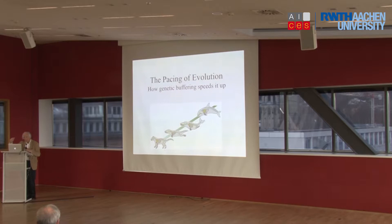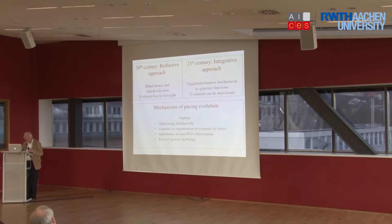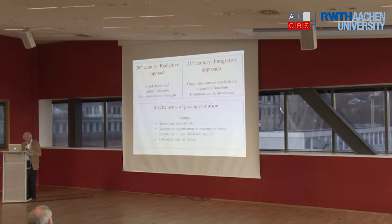How did we get from a whale to a land animal, or could we? In order to address this part of the lecture, I'm going to compare two approaches: on the one hand, the 20th century reductive approach — blind chance mechanism followed by natural selection, meaning evolution has no foresight whatsoever, it's all random chance — with what I call the integrative 21st century view, that organisms actually use chance; they harness stochasticity to generate function, in which case evolution does have some direction when viewed from the organism's perspective.